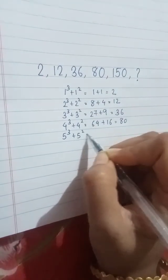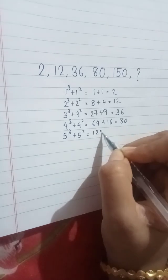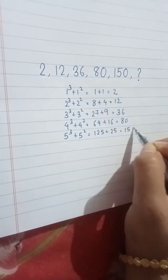Similarly, 5 cube plus 5 square. We get 125 plus 25 that is 150.